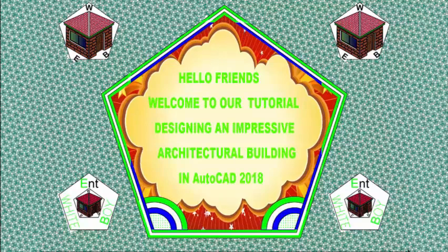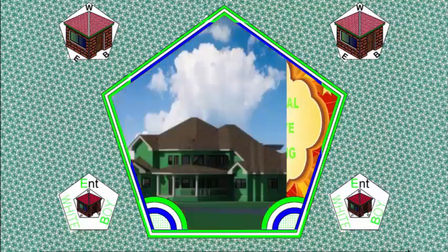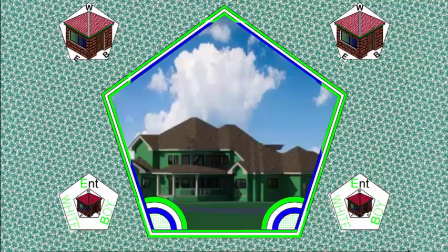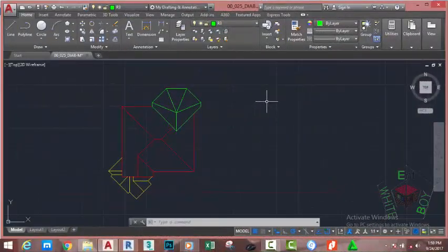Hello friends, welcome back to our tutorial designing an impressive architectural building in AutoCAD 2018 metric. If you have been following along, go and open the file 00_025_BIABM where you saved it. You can also download this file on the website or use your own file. If you don't have access to the exercise file, just sit down and watch the video.